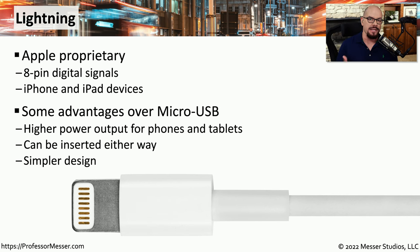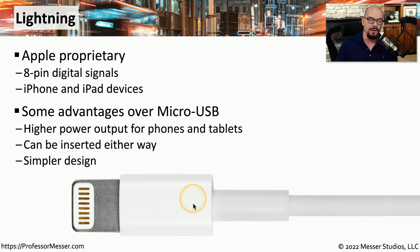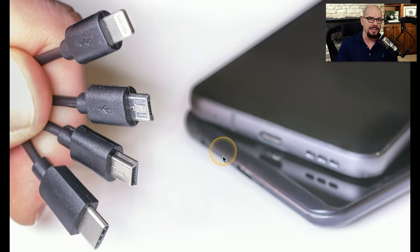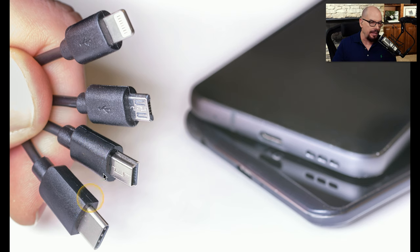There are a number of advantages that Lightning has over micro USB. One is that the Lightning connection supports a higher power output, which allows us to charge phones and tablets that much faster. It's also a type of connector that can be inserted either way, which was a problem prior to the advent of USB-C. As a technician, you'll probably carry cables for USB, mini USB, micro USB, and Lightning connectors in your tool bag so you're able to connect to whatever you might find.